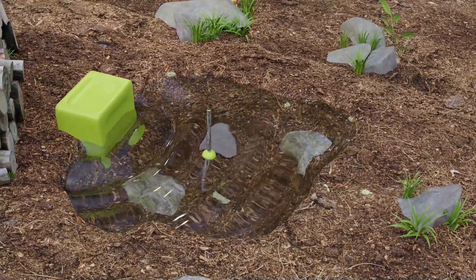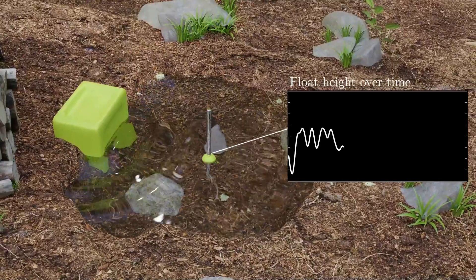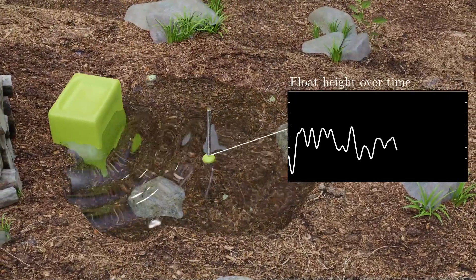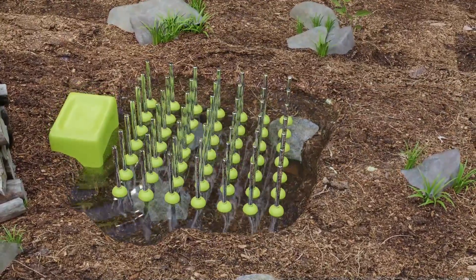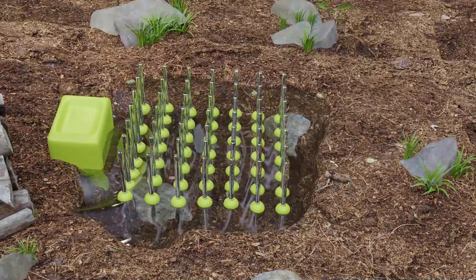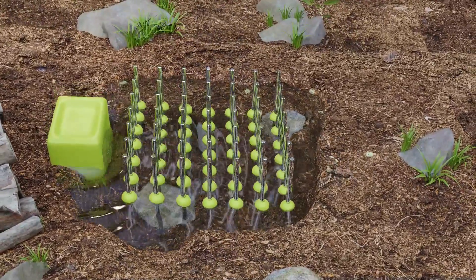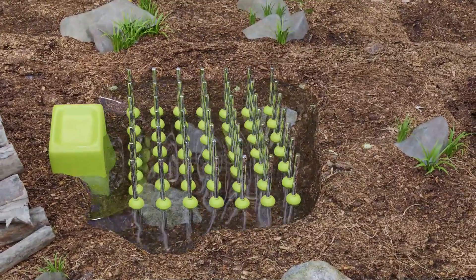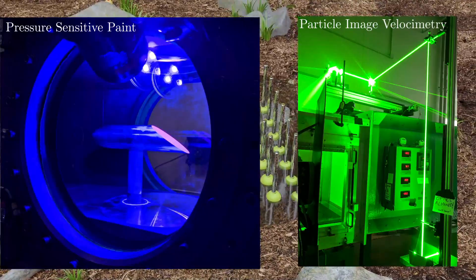We can easily plot a signal of the float height over time, which looks like this. So this float is acting as a point sensor of the height of the wave at a fixed location. We can perform measurements over several locations, and as an experimental aerodynamicist, we can really use all sorts of techniques to get hundreds or even thousands of probes in a flow, with techniques such as particle image velocimetry or pressure-sensitive paint.